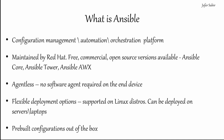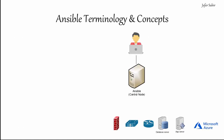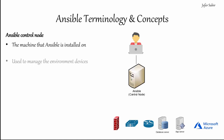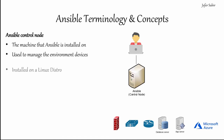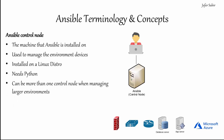Moving on to terminology and concepts and looking at the Ansible components. The first one is the Ansible control node, which is the Ansible management server — it's used to manage the other devices. This is the machine that Ansible is installed upon. It's installed on a Linux based distribution and needs Python running on it. You can use any computer — servers, laptops or desktops — and you can have multiple control nodes if you have a large estate to manage.